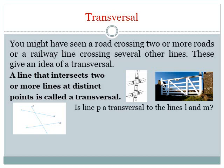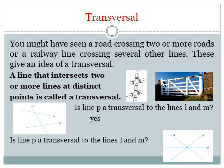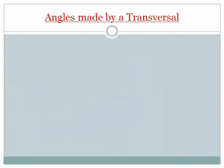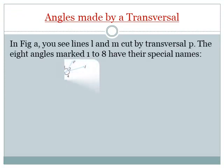Is line P a transversal to lines L and M? Yes, line P is a transversal to lines L and M because line P intersects L and M at different points. Is line P a transversal to lines L and M in this figure? No, line P is not a transversal to lines L and M because line P, line L and line M do not intersect at distinct points.